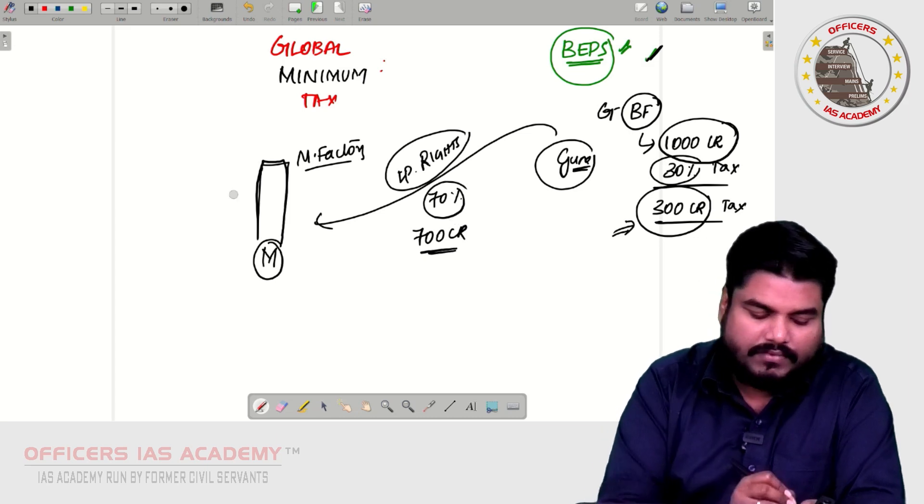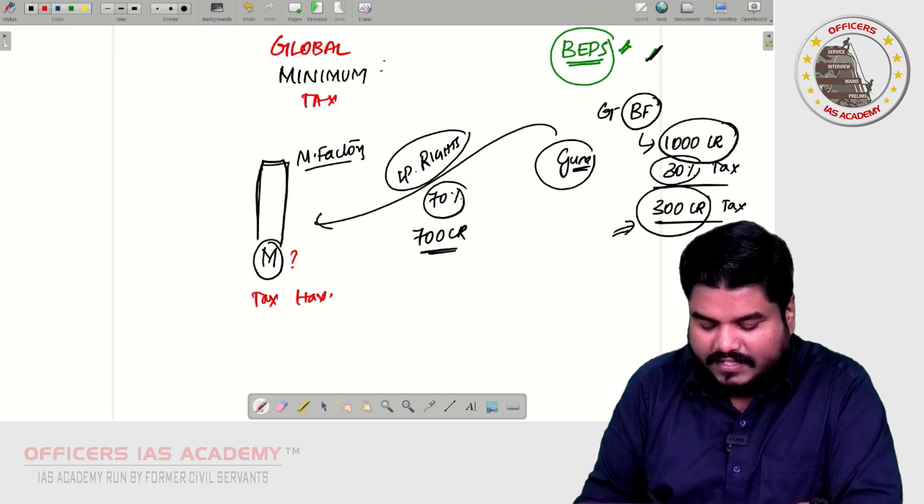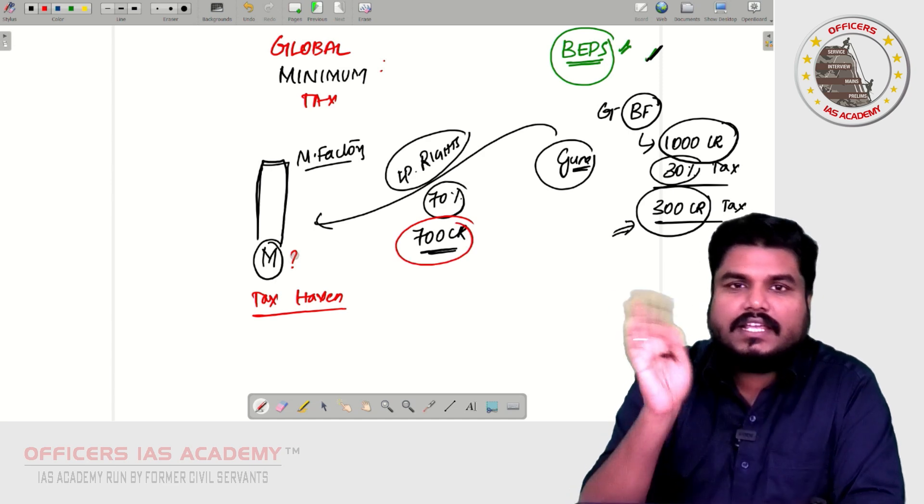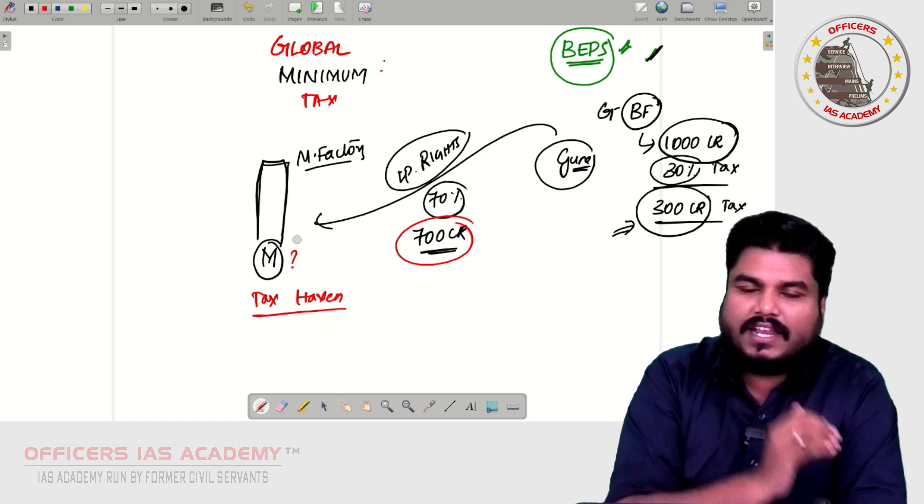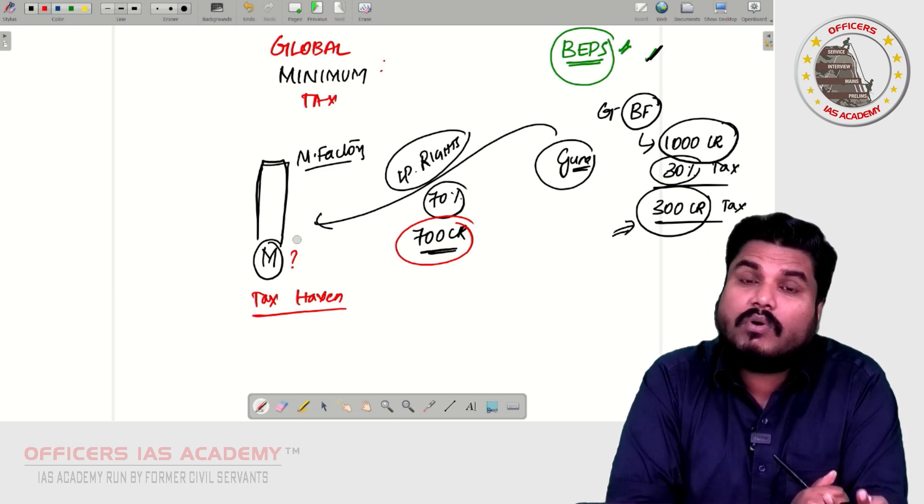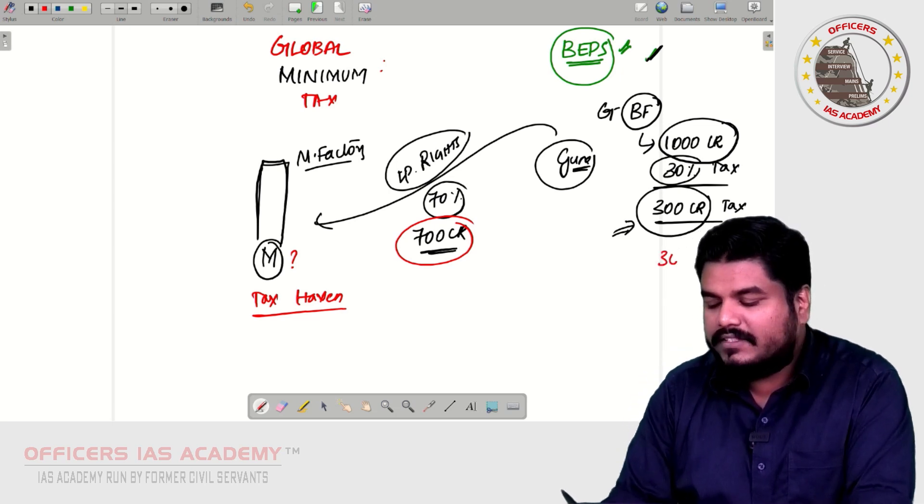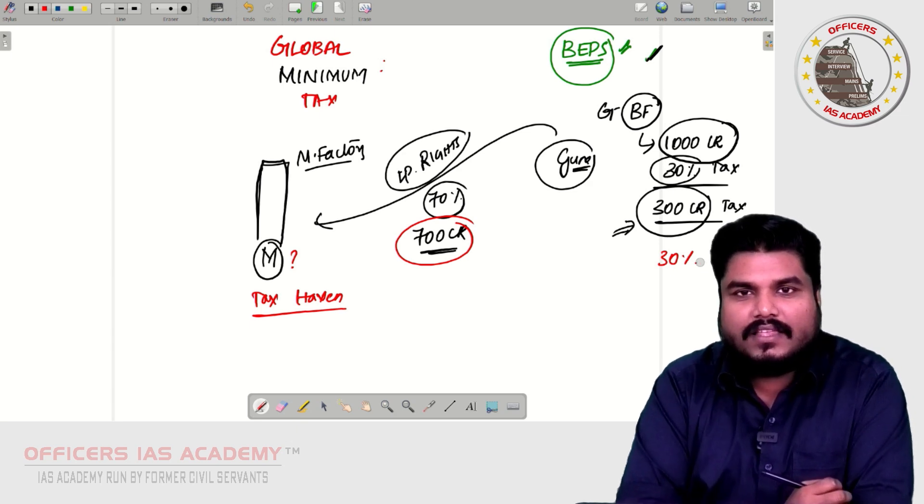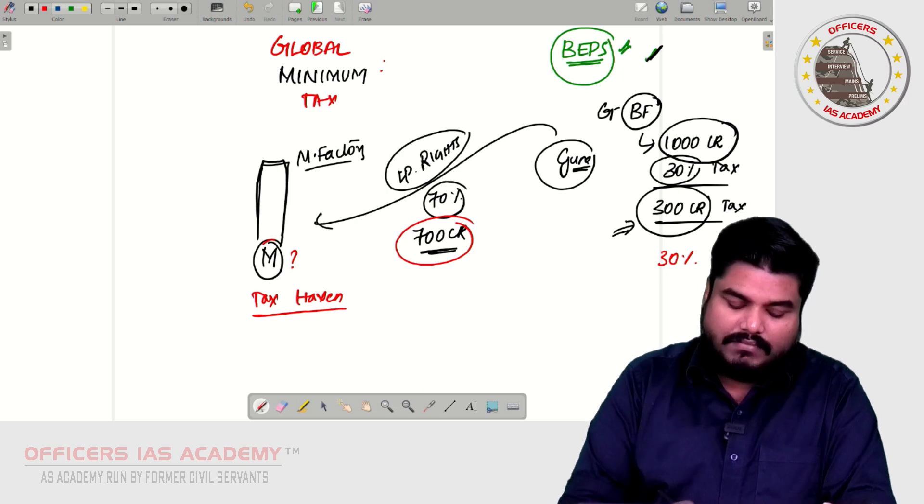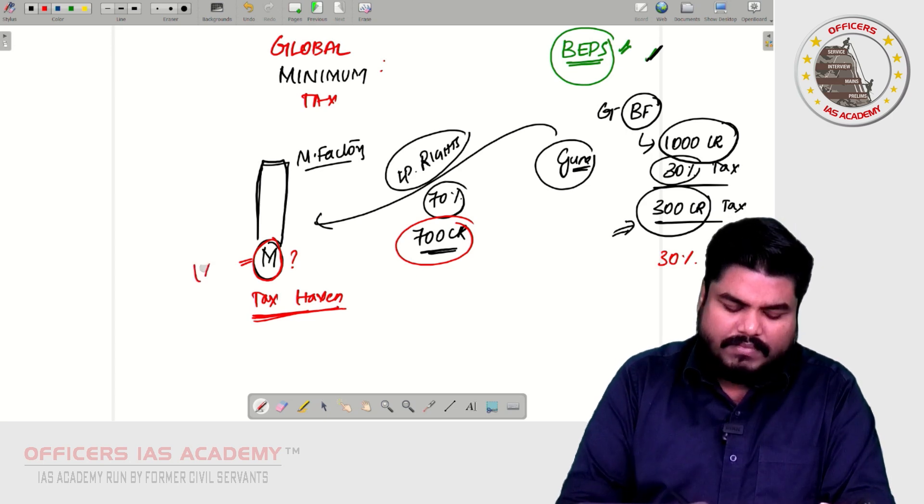So Guna was running a Biryani Factory. He has to pay 300 crores of tax. To escape from tax, he started Masala Factory in Mauritius and transferred the IP rights. In terms of royalty payment, 70 percent, that is 700 crores out of thousand crores total amount, was sent to Mauritius. Why Mauritius was chosen? Because Mauritius is a tax haven. It is a low tax destination. So this 700 crores in Mauritius will not be taxed by that government, even if they tax, will impose a very small tax of 1 percent or 0.5 or sometimes even 0.1 percent.